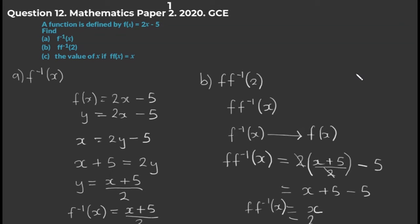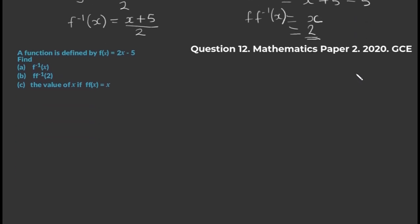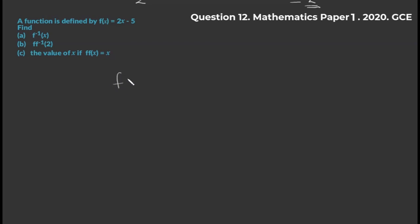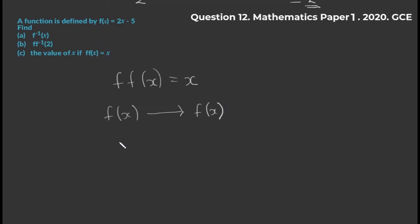Now let's look at part C, where we're asked to find the value of x if f(f(x)) = x. To define f(f(x)), we plug f(x) into f(x). Since f(x) = 2x − 5, we substitute it in where we had x, giving us f(f(x)) = 2(2x − 5) − 5.